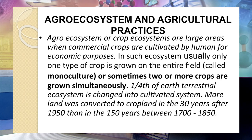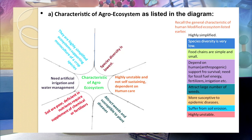Our next item in human modified ecosystems is the agro system and agricultural practices. Agro ecosystems or crop ecosystems are large areas where commercial crops are cultivated by humans for economic purposes. In such ecosystems, usually only one type of crop is grown on the entire field — a practice called monoculture. Sometimes two or more crops are grown simultaneously. One fourth of Earth's terrestrial ecosystem is now changed into cultivated systems. The characteristics of agro ecosystems are listed on this slide, and on the right hand side the general characteristics of human modified ecosystems are also listed for revision.